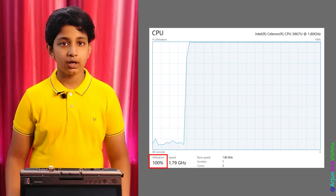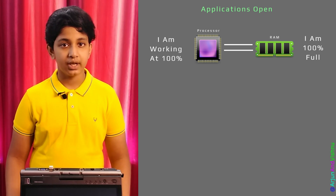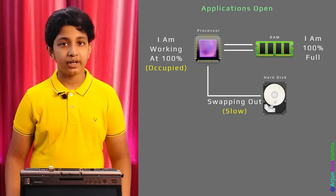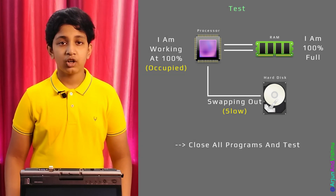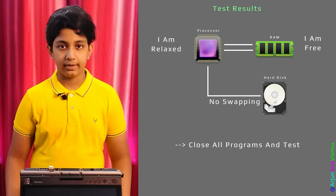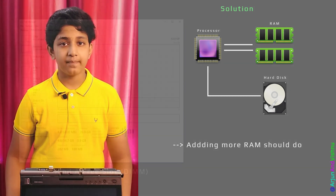If you see that the processor is staying at 100% for a majority of time, then check to see if the RAM usage is also at 100%. If it is so, then the processor must be busy swapping out contents from the RAM to the hard disk. To confirm, close all the programs and see if the processor usage drops below 50%. If it does, then your computer can be speeded up by adding more RAM to it.